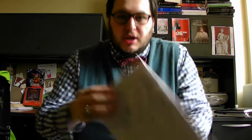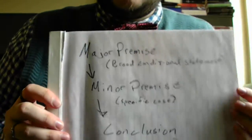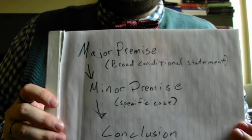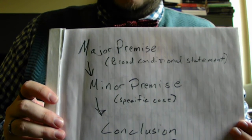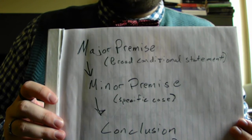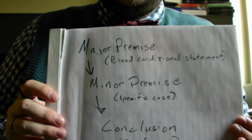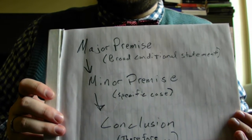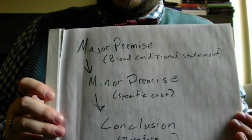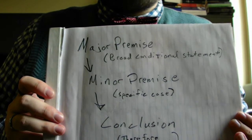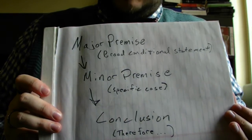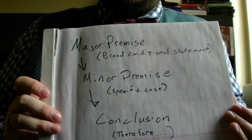Essentially, what makes a syllogism a syllogism is that it works from premises to a conclusion. Specifically, it works from a major premise through a minor premise to a conclusion. A major premise is a broad statement of condition — all things within this group have this characteristic. The minor premise takes a specific example and identifies it as within that group, and therefore we can conclude that this specific example has whatever condition it is.